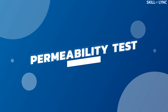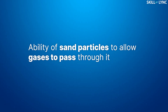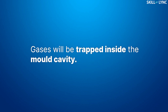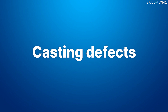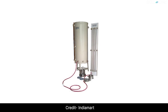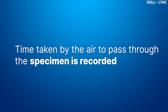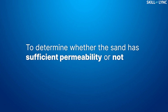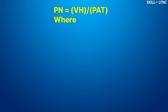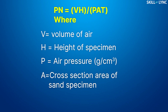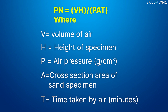The next test is the permeability test. Permeability is the ability of sand particles to allow gases to pass through. If the sand has insufficient permeability, gases will be trapped inside the mold cavity, causing defects in the final casting. An apparatus is used in which air is passed through a specimen at a pressure of 10 grams per cubic centimeter. The time taken by the air to pass through is recorded, and based on this, a permeability number is assigned. The permeability number is given by the equation Pn = VH / PAt, where V is the volume of air, H is the height of the specimen, P is the air pressure, A is the cross-sectional area of the sand specimen, and T is the time taken by air in minutes.